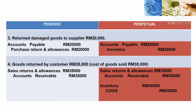The third transaction: return damaged goods to supplier RM20,000. Under periodic, debit accounts payable and credit purchase returns and allowances RM20,000. But under perpetual inventory system, debit accounts payable and credit inventory RM20,000. Under periodic we use the purchase returns and allowances account, but under perpetual we use the inventory account.